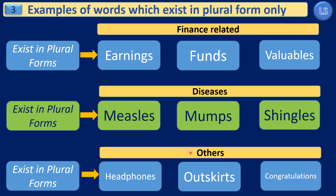The last subsection, 'others,' includes headphones, outskirts, and congratulations. We don't say headphone — we always say headphones. There is no such word as outskirt — it is always outskirts. And we always say congratulations. From all these examples, it is clearly understood that there are some words which always exist in plural form only.